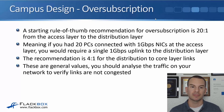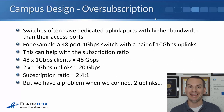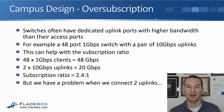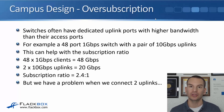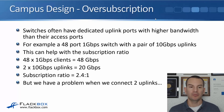These are good ballpark figures. Switches often have dedicated uplink ports with higher bandwidth than their access ports. For example, a 48-port 1 gigabit switch with a pair of 10 gig uplinks can help with the subscription ratio. If you've got 48 one-gig clients, the total possible bandwidth is 48 gigabits per second. With two 10 gig uplinks, that's 20 gig on the uplink side, giving a subscription ratio of 2.4 to 1. Without those 10 gig uplinks, if the uplinks were also 1 gig, the subscription ratio would be 24 to 1.